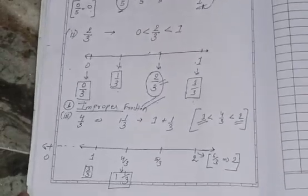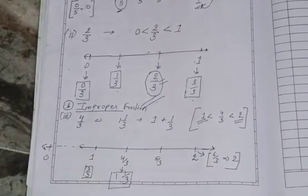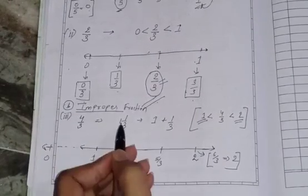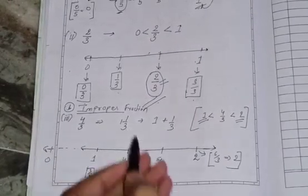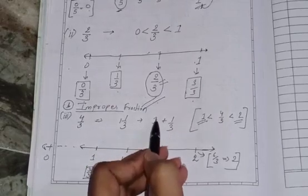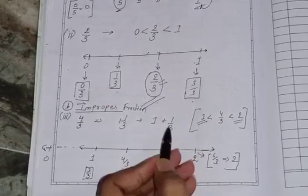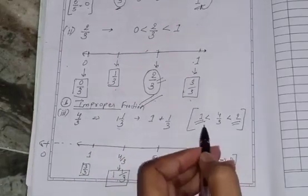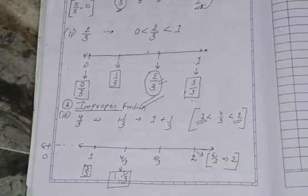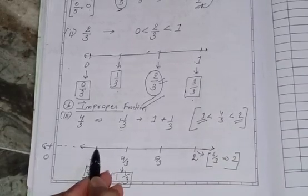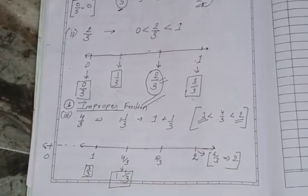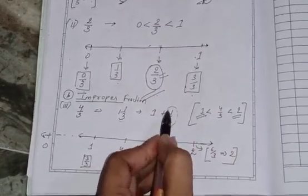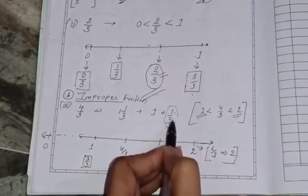Now, let's take another example of improper fraction like 4 by 3. So, first we need to convert it into mixed fraction like 1 whole 1 by 3. Now, you know that this 1 whole 1 by 3 we can be written as 1 plus 1 by 3 because it is greater than 1. It means that this number is greater than 1. So, it should be lying between 1 and 2. So, we will make a line marking from 1 to 2. What we will do? Now, we will convert this number line, this improper, this proper part into 3 equal halves because it is 1 by 3.